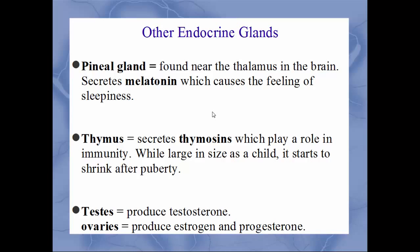Other endocrine glands: the pineal gland, near the thalamus, secretes melatonin — which makes you sleepy when it's dark or overcast. The thymus synthesizes hormones called thymosins; it starts large in childhood but shrinks after puberty and is mostly gone by middle age — it plays a major role in immunity, covered in a later chapter. Finally, the testes produce testosterone in males, and the ovaries produce estrogen and progesterone in females.